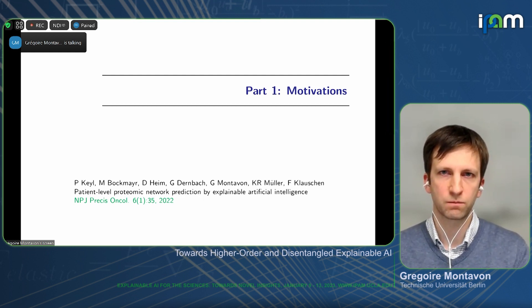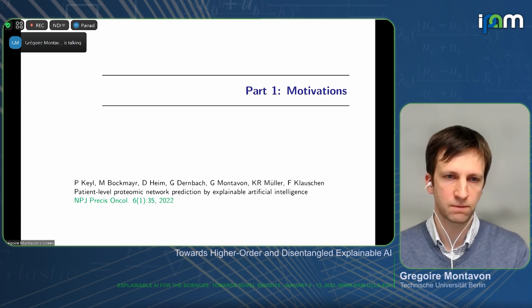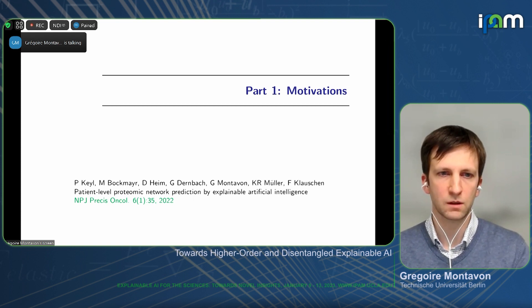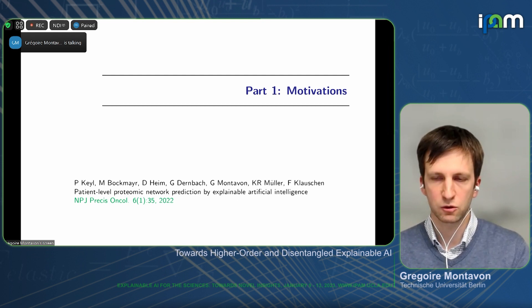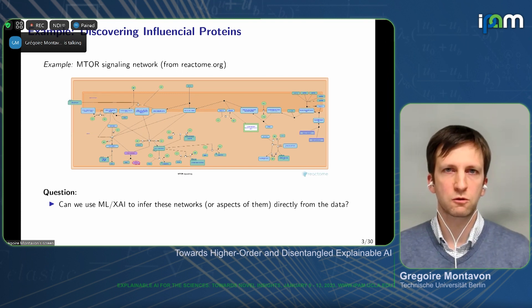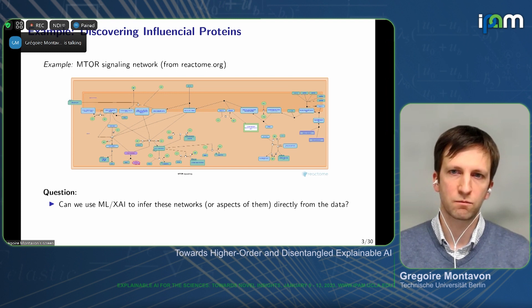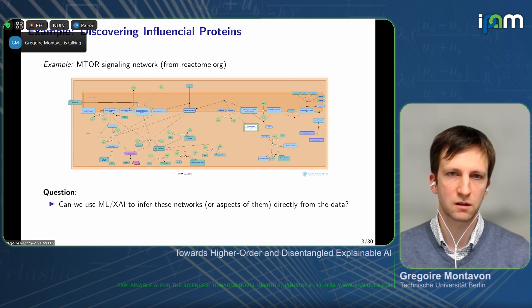I'll start with some motivating examples of what kind of applications we are aiming for, especially in the context of using explainable AI for scientific applications — for extracting insights in the data. This is the first work we published last year by Philip Kyle, in collaboration with people in Berlin and Munich, including Frederick Clausen. What we want to do is try to find influential proteins in signaling networks. Here is an example of the mTOR signaling network, which you can find on knowledge bases like reactome.org.